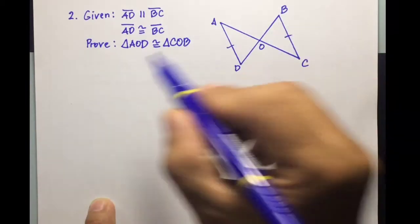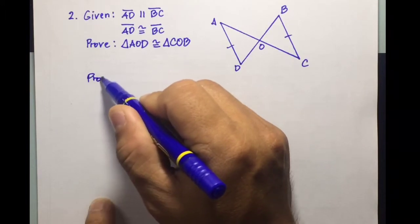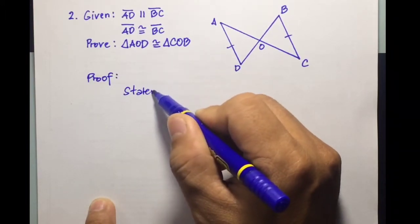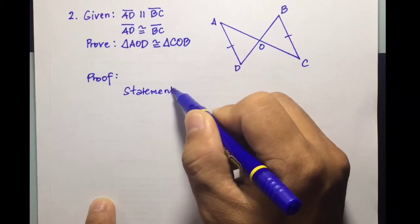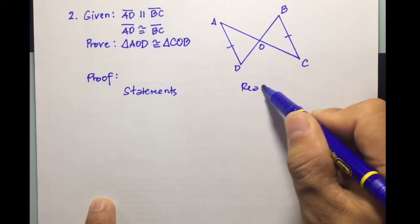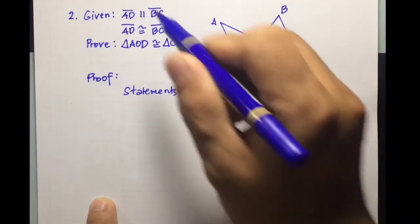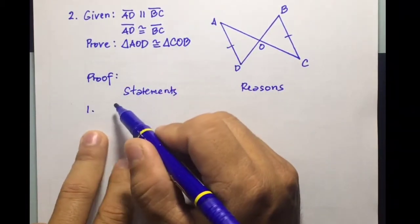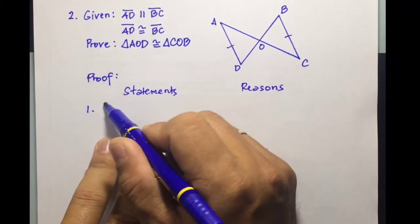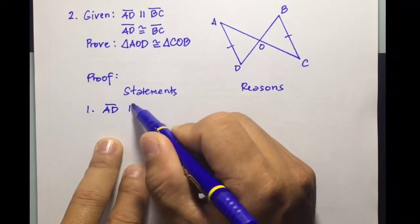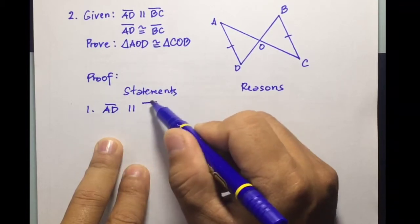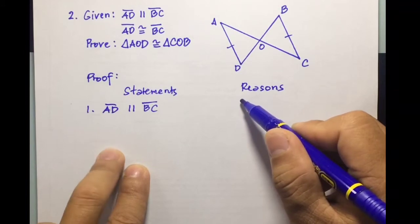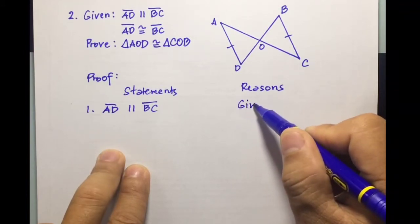Let's have the proof. For the statements and reasons columns, as usual, we start with the given as our first statement: line segment A-D is parallel to line segment B-C. The reason is given.